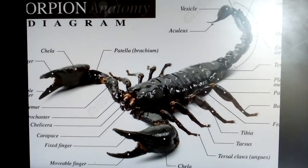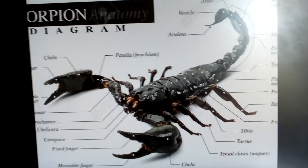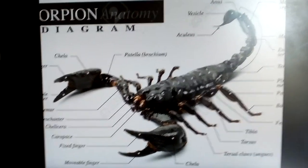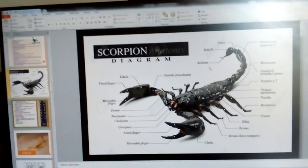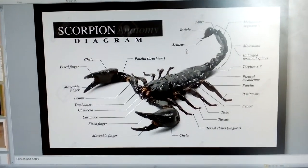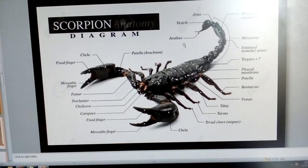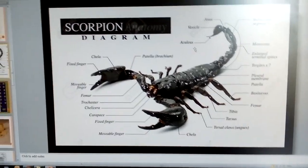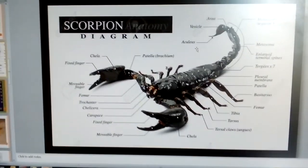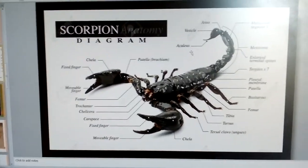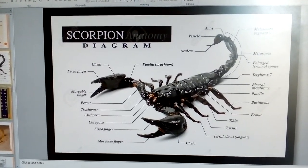Here is a diagram of the scorpion. You can see the chelicera, pedipalp, and the scorpion's pedipalp and chelicera labeled in the diagram.